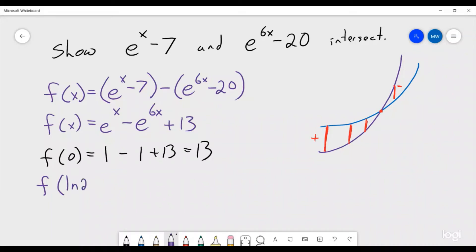So f of the natural log of 2. This is e^(ln 2) minus e^(6 ln 2) plus 13. So this is e^(ln 2) minus e^(ln 2^6). And using log rules, remember that a log base b of c is equal to log base b of c^a.